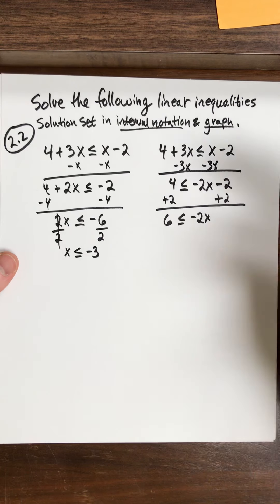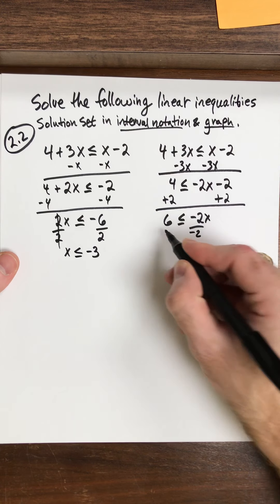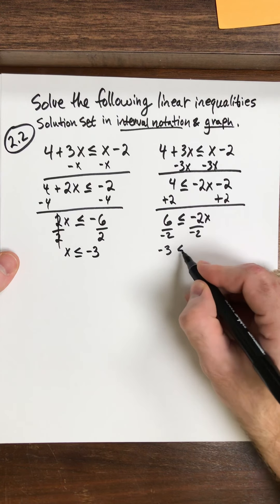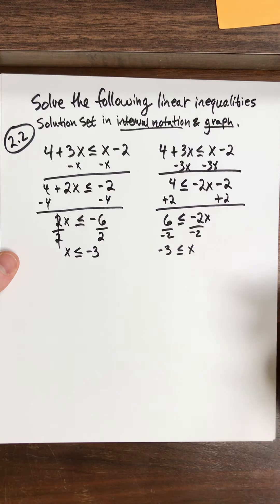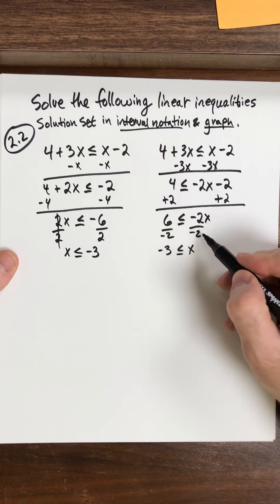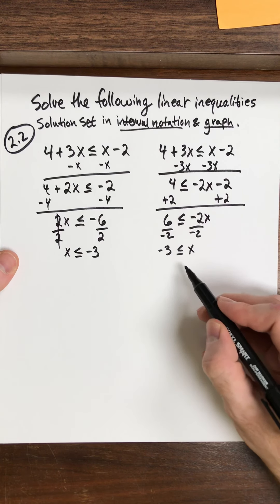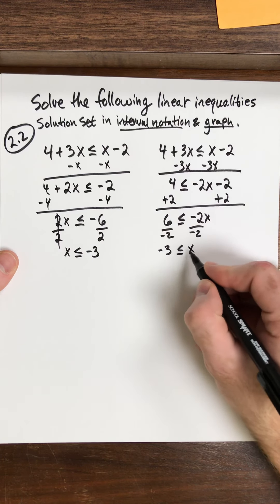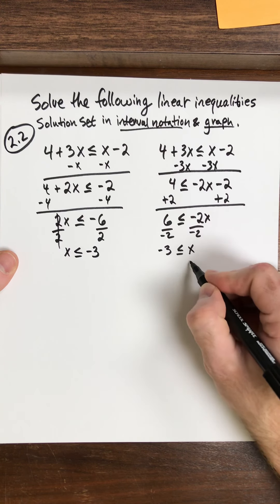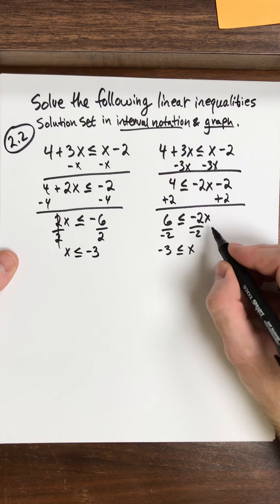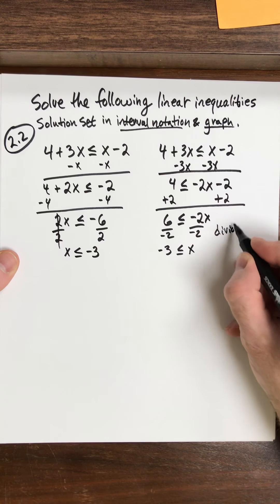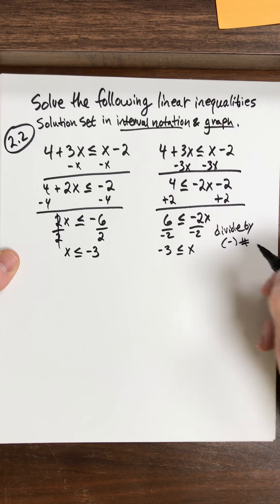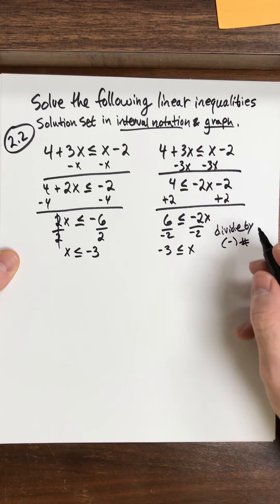Okay, now typically what I would have done is I'd have just divided by negative 2 and then I would have written negative 3 is less than or equal to x. But since I divided by a negative number, the inequality has to turn around. Okay, so that inequality now instead of x being greater than or equal to negative 3, it actually flips. So when I divide by a negative number, the inequality changes.